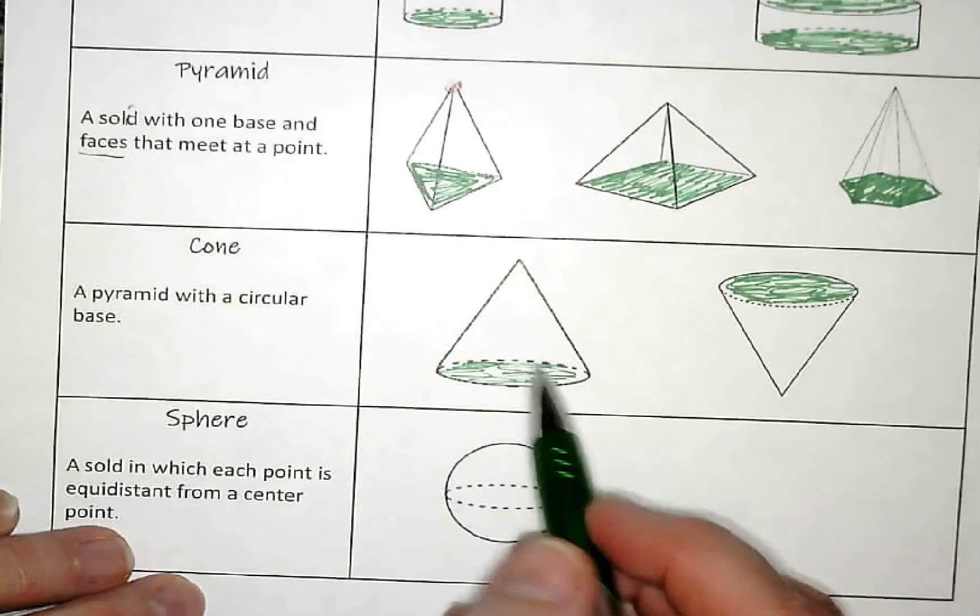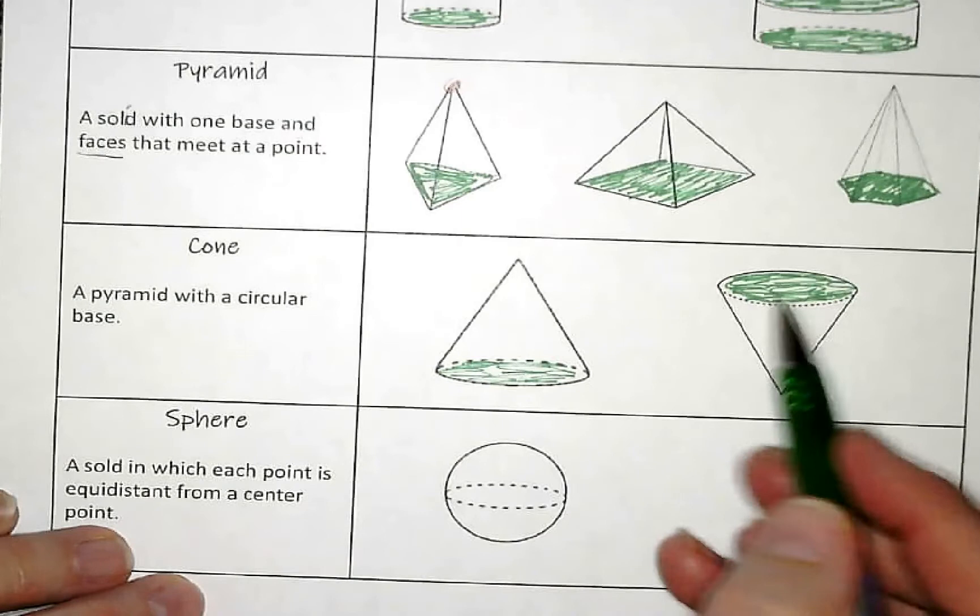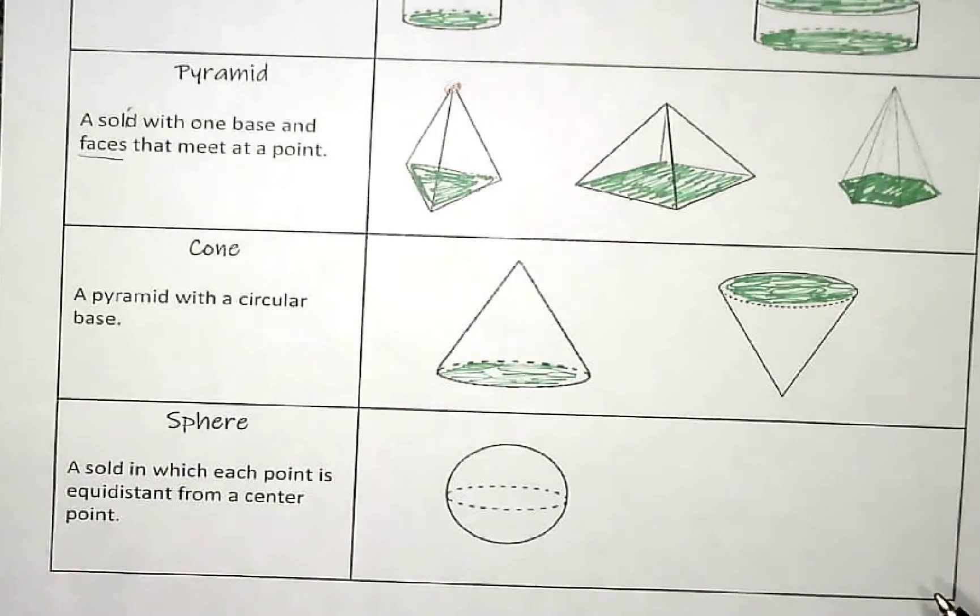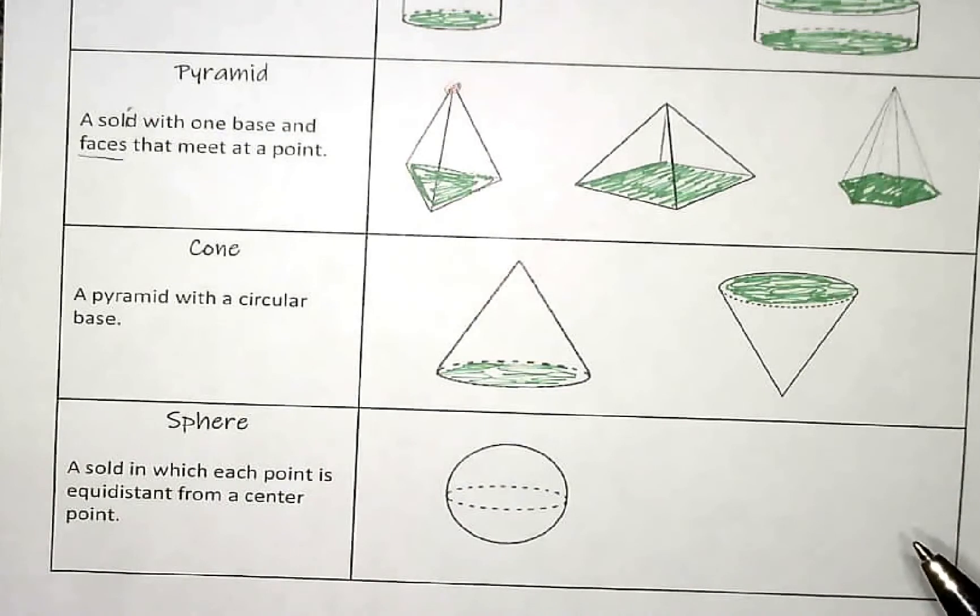Cone is a type of pyramid, but the base, rather than being a triangle or a square, the base is a circle. Again, because circles are very consistent on what they need, those are usually pretty easy also.